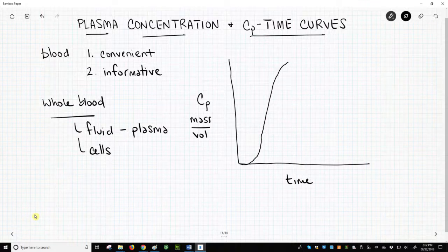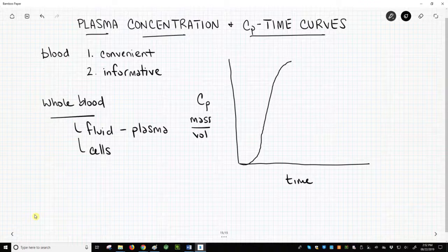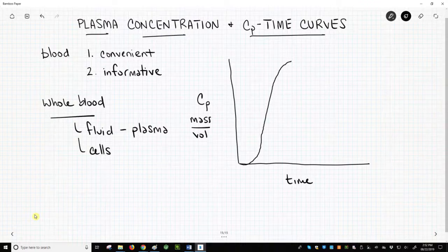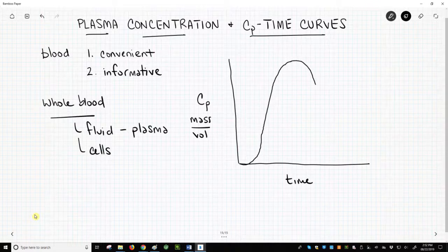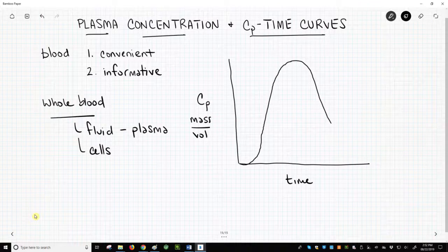At this point, the CP will rise rather rapidly and continue to rise until the drug has been completely absorbed. At this stage, the observed CP will begin to drop as the body either breaks down or excretes the drug.